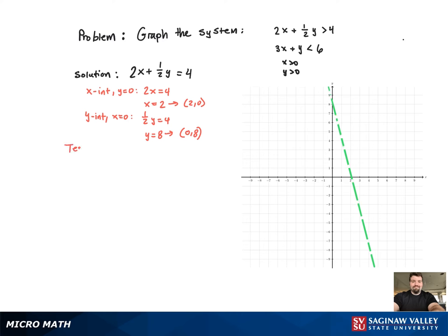Now since it's an inequality, we have to shade a region. So we need to use a test point. We'll use (0, 0), convenient point. And we plug that in. We get 0 greater than 4, which is false.